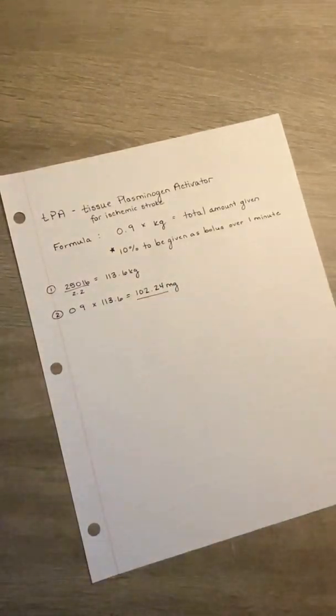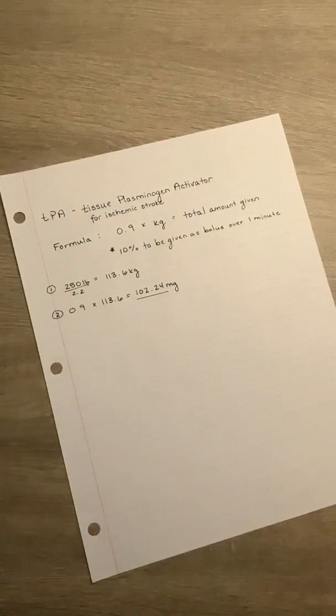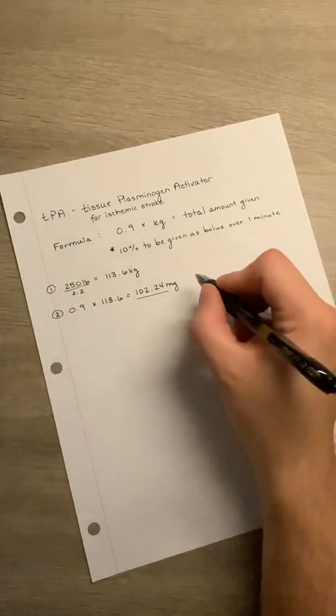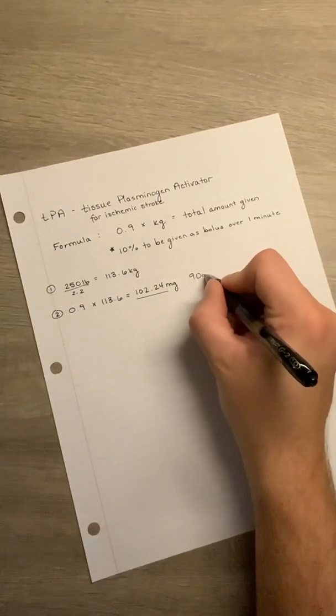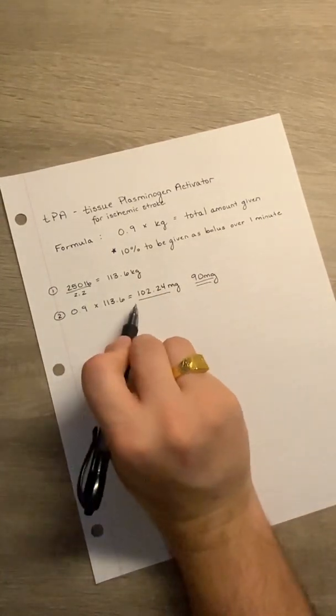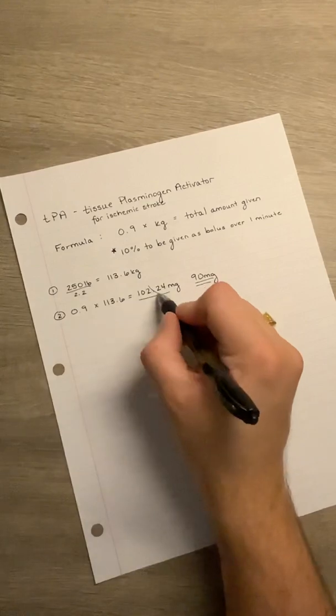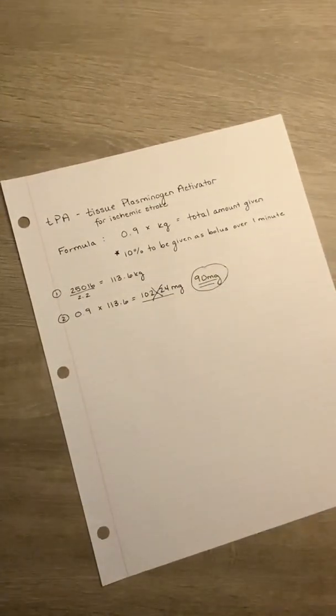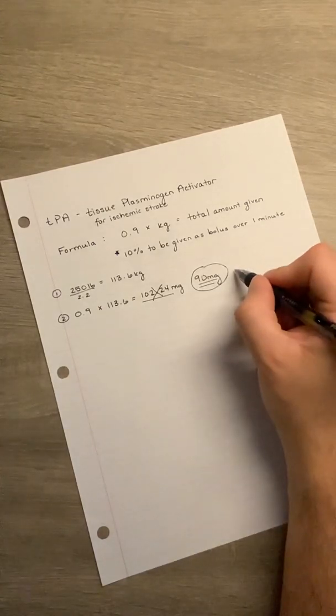We must always remember that the maximum total volume that we're going to give a patient for TPA is 90 milligrams. So if our patient calculates out to be higher than the 90, we're going to disregard the higher amount and always stick with our maximum dosage. This dosage has to be given over one hour.